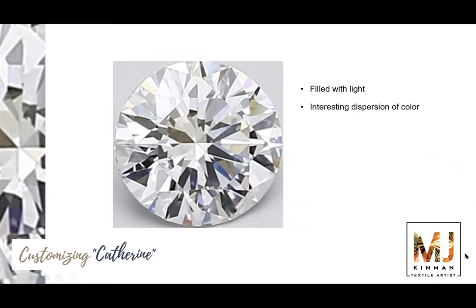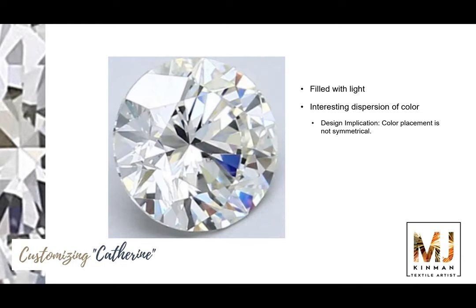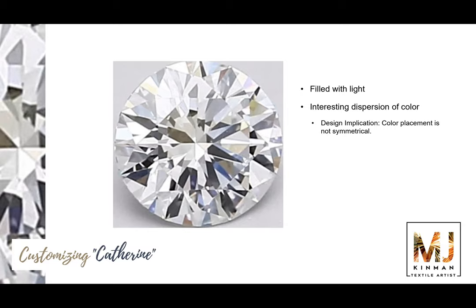The other thing I like about this is the interesting dispersion of color and value contrast. The design implication here is that color placement is not symmetrical — it is very random. When it comes to gemstones, this is just one personality of this single gemstone. If you were to move this gemstone just a fraction, she would throw off an entirely different pattern of lights and darks and colors — her personality would change. It's simply a result of the facets in relationship to the light source. So people always ask me what is the best placement of color and values in my gemstone. The answer is there is no right placement, which means there's no wrong placement. So what I want you to do is just relax, enjoy, and make this your own.